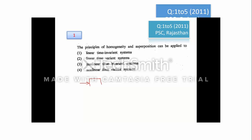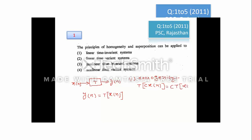For question number 1, consider a building block represented by a system having input x(n), output y(n), and T representing the properties of the system. The input-output relation can be written as y(n) = T{x(n)}. The homogeneity property is tested by giving the input multiplied by constant c and observing the output; if the output equals c times the original output, the system is homogeneous.